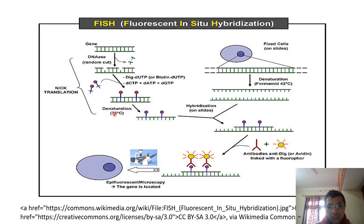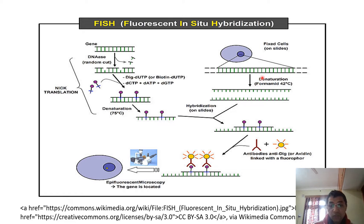Under the denaturation process at approximately 75 degrees centigrade, the single strands become separated. Then you will see that this is a cell — maybe it is a tissue sample, maybe it is cells. You can denature the cells using histological techniques and fix them with a fixative agent — formaldehyde — at 42 degrees centigrade. Both sequences are now separated from each other.